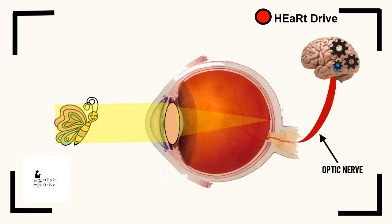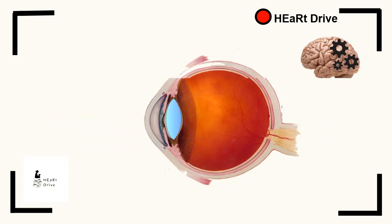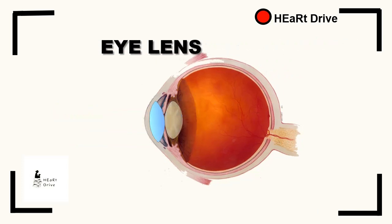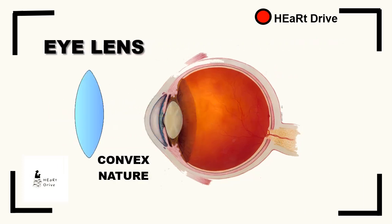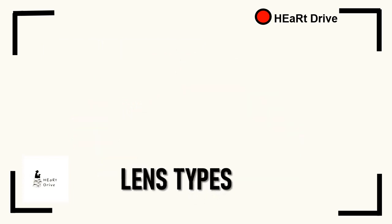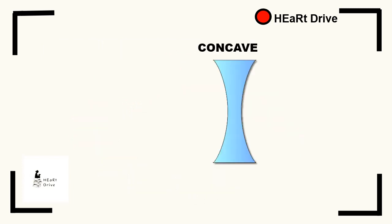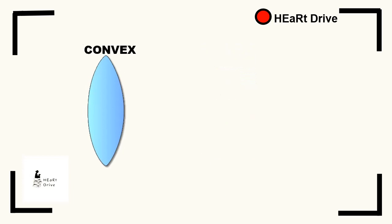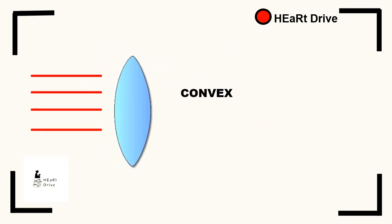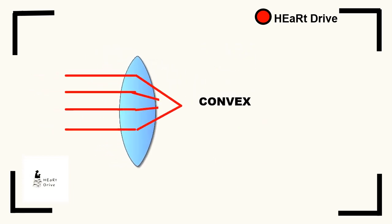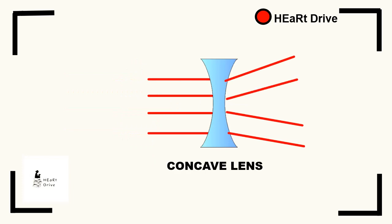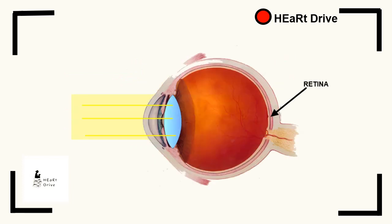Finally, the visual cortex of the brain interprets these impulses as what we see. The lens of the human eye is of convex nature. Generally, lenses are of two types: concave and convex. Convex lens converges the light, whereas concave lens diverges the light. The human eye has a convex lens which converges the light on the retina.